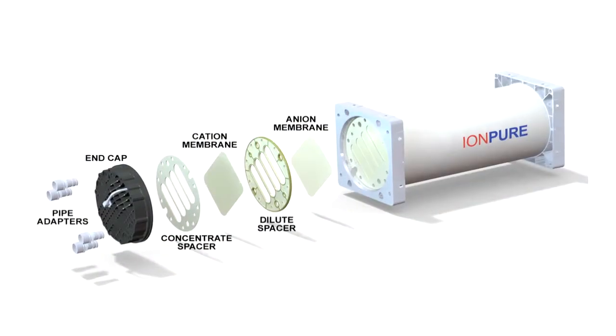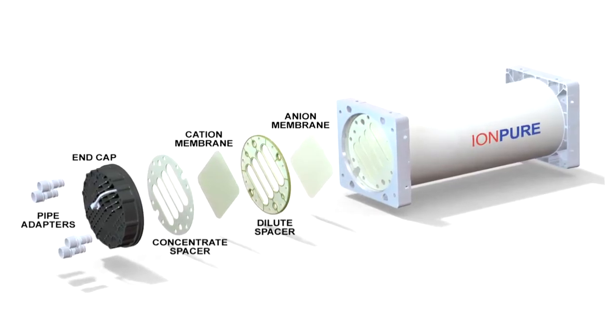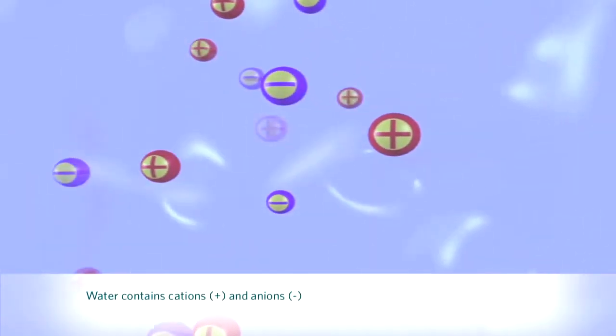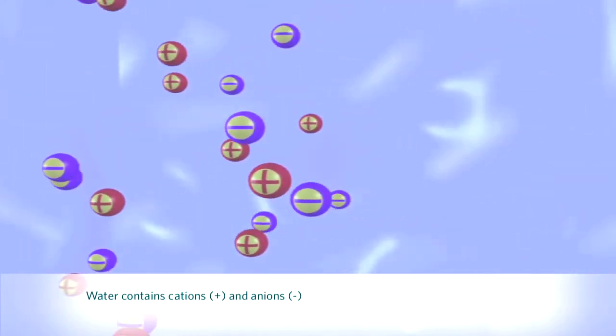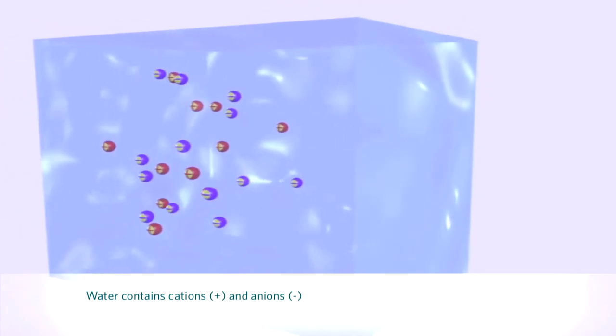To understand how the patented IonPure CEDI technology actually works, let's go down to the molecular level and take a look at some water containing ions. Water contains positively charged cations, represented by plus signs, and negatively charged anions, represented by minus signs.